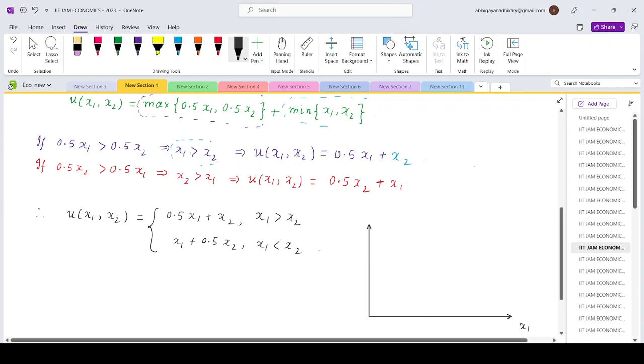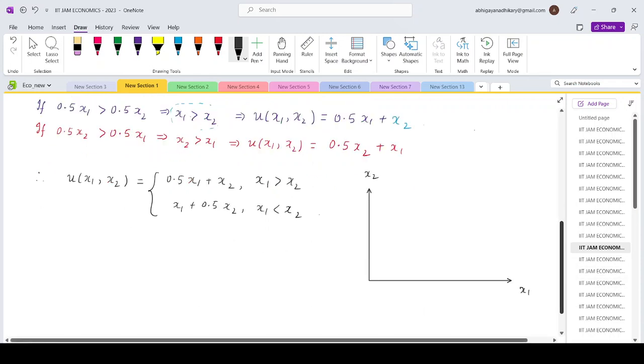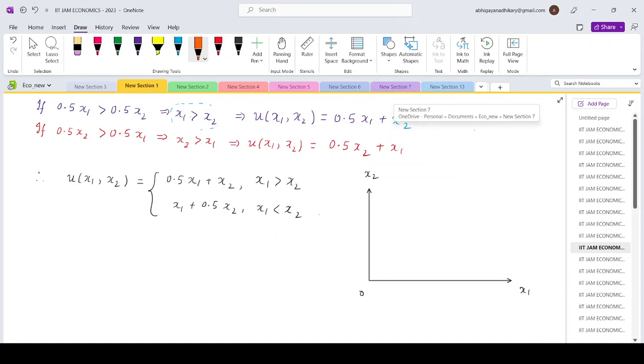So if we try to plot the indifference curve, there are two goods x₁ and x₂, 0 over here. x₁ equals x₂ would be the 45 degree line from the origin positively sloped. So this is my x₁ equals x₂.